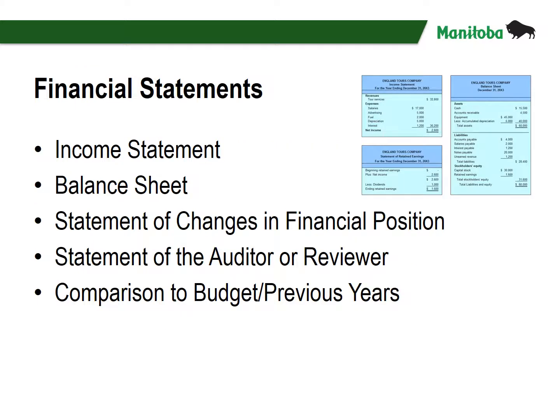Year-end financial statements are the key to understanding the financial position of the organization. The financial statements will usually include an income statement, a balance sheet, a statement of change in financial position, a statement of the auditor or reviewer, and comparison to the budget or to previous years. The report may include a statement by the auditor or reviewer describing their findings, any recommendations or concerns, and any major changes from the previous year. Ideally, the year-end financial statement will show a comparison to one or more previous years as well as to the year's budget, giving the membership a summarized picture of how much has been spent, where it has been spent, what income was generated, and how these compare to the budget and to past years.